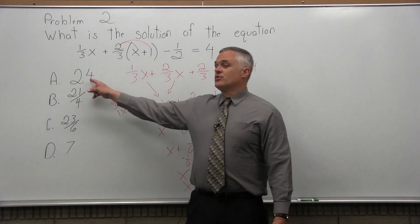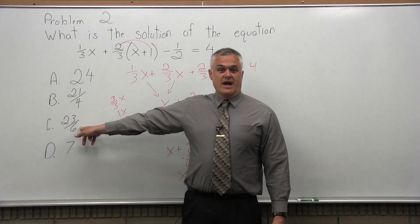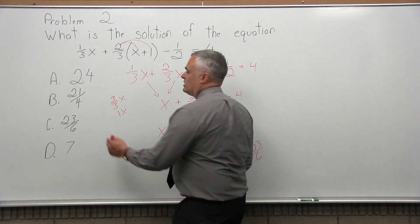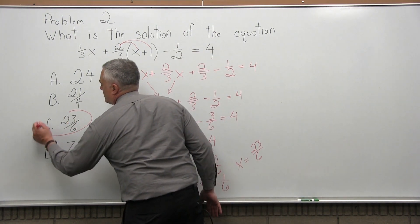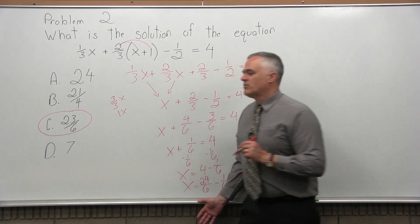Now, if I look through my available options, option C is, in fact, 23 over 6. So, option C, 23 over 6, is the solution for problem 2. I'll see you in the next video.